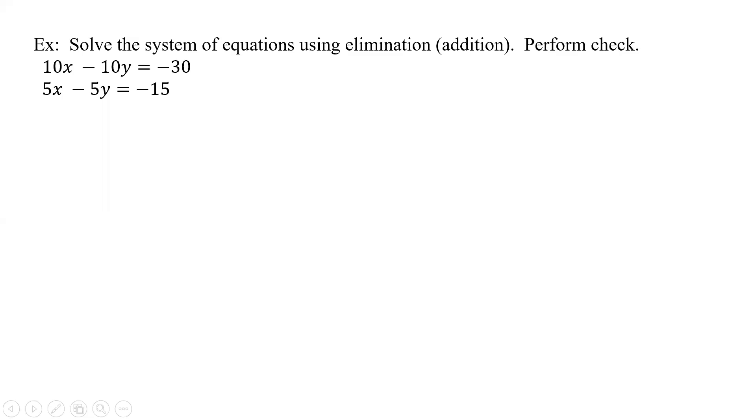All right, so what do we have here? Two equations that both have the same signs on x's and y, so we're going to multiply one of them by a negative. It looks like if I take the bottom one times a negative 2, that way we can eliminate x's.